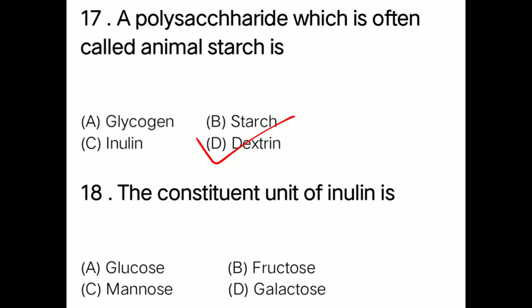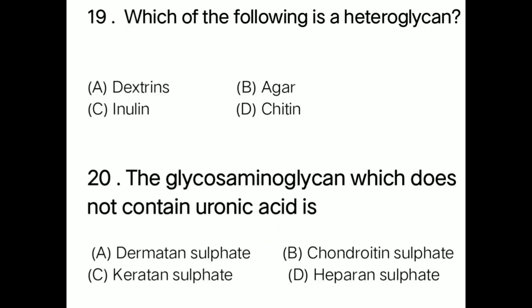Question: The constituent unit of inulin is option A glucose, option B fructose, option C mannose, option D galactose. Correct answer is option B: fructose.